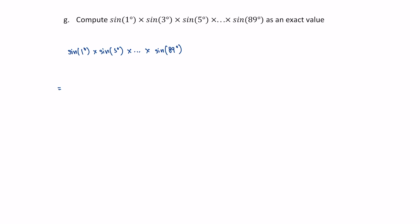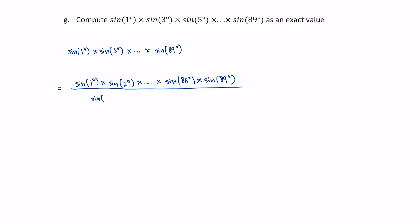The first thing I did was multiply the top and bottom by all of the missing even degrees. So this would be equal to sine of 1 degree times sine of 2 degrees, all the way up to sine of 88 degrees and sine of 89 degrees. I've multiplied the top and bottom by all the even ones, so I have to multiply the bottom by: sine of 2, sine of 4, and so on, with the last one being sine of 88.